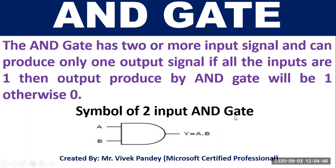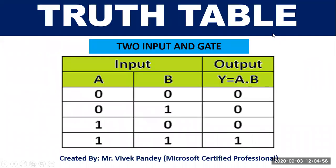Symbol of a two-input AND gate: if we pass input A and B to the AND gate, then our output will be A dot B. In the truth table of the two-input AND gate, if both inputs are one then output will be one; otherwise zero.